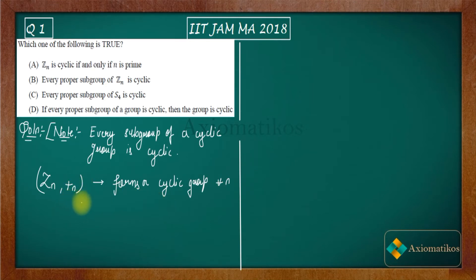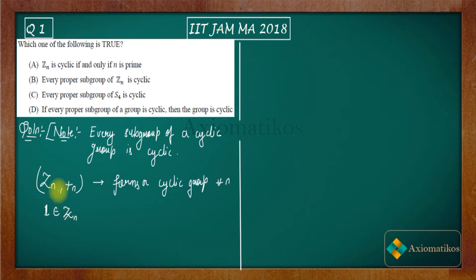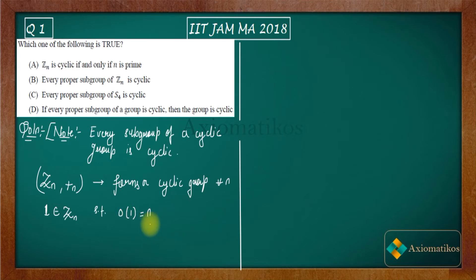Since Zn is a cyclic group for every n — why? Because 1 belongs to Zn, and the order of 1 is n. If you add 1 exactly n times, you get zero, and not before. So 1 generates the entire group.